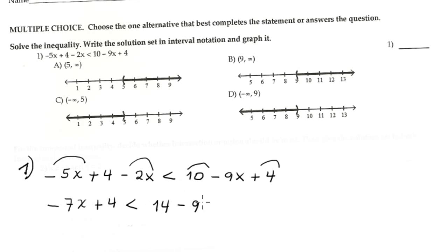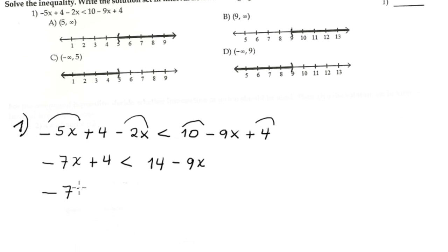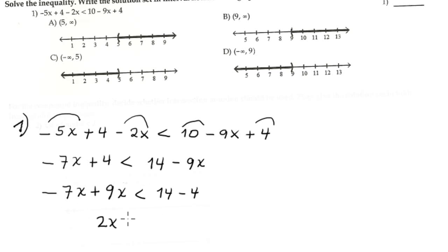Moving every term containing x to the left: -7x + 9x, which simplifies. Combined again, this gives 2x less than 14 - 4, which is 10. Dividing by 2, x is less than 5.